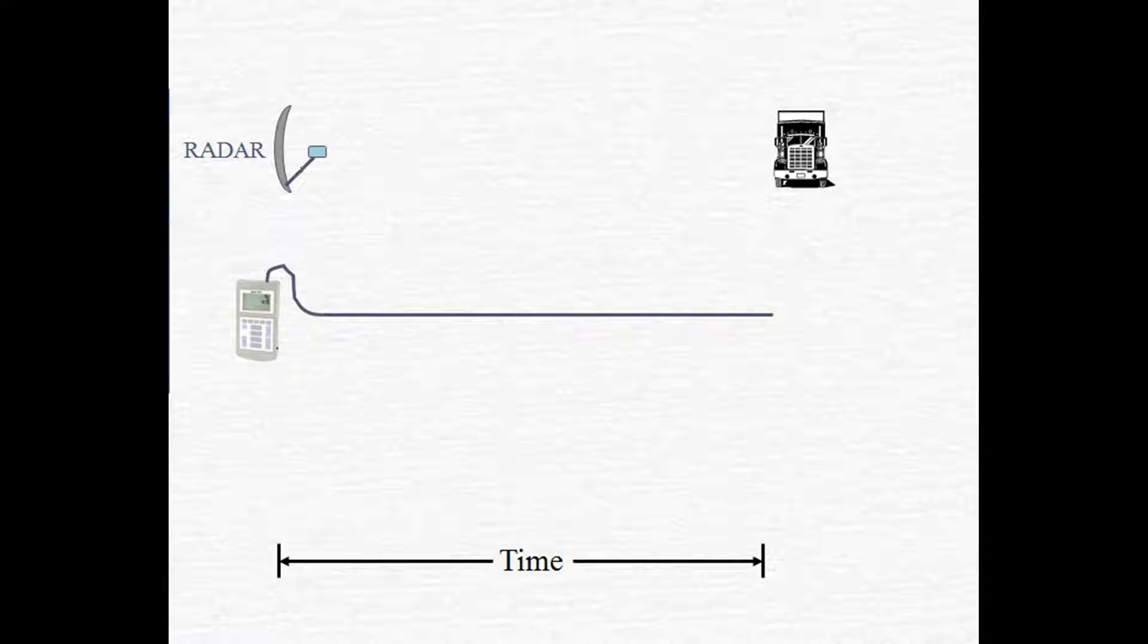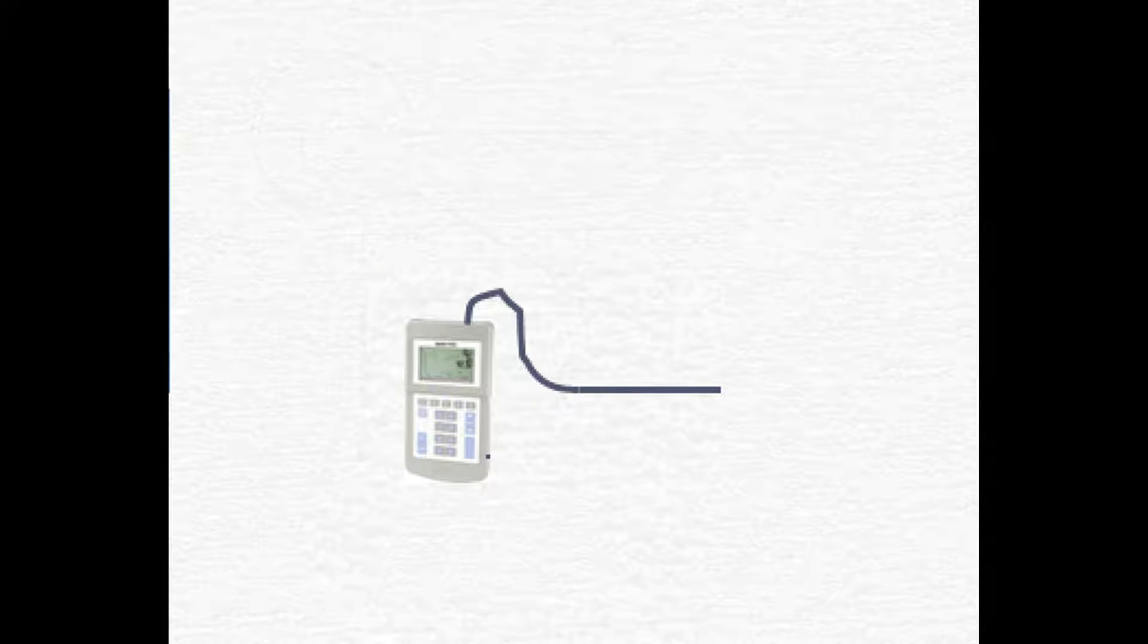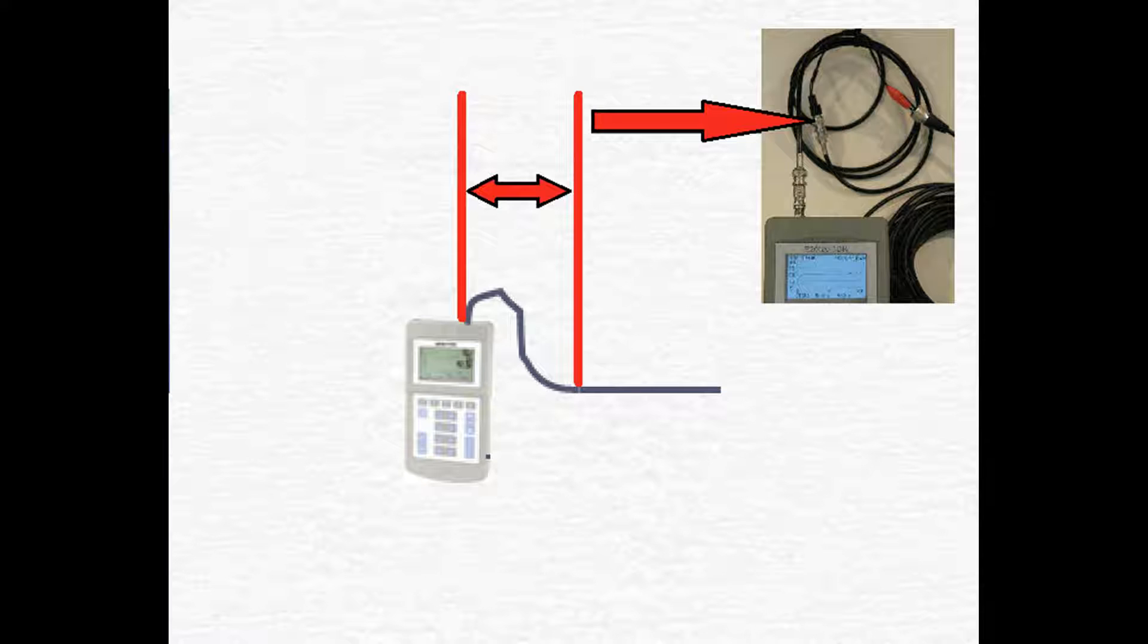A TDR does the same thing, but instead of using a radio wave, it sends an electrical impulse. The pulse travels down the wire, strikes the fault, then returns. Since you're dealing with wire instead of open air, an accurate measurement requires you to consider a few other factors. The first is, the test set is hooked up using test leads. Since your electrical pulse travels down the test leads before getting to your cable, the length of the leads will be included in your distance. All TDRs that I've ever used give me a software option to eliminate the test lead error.